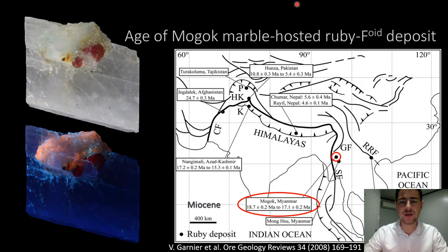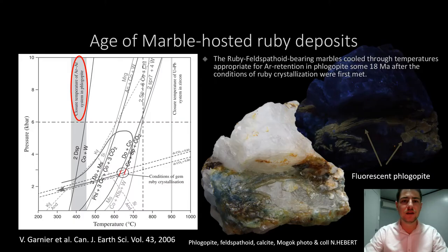What about the age of the marble-hosted ruby deposits from Mogok? This occurrence is located close to major tectonic features from during Himalayan orogenesis directly in the suture zone from the Himalayas. Phlogopite crystals are isolated, and the minimum age for argon retention in the phlogopite associated with the ruby-feldspathoid marbles are dated some 18 million years after the conditions of ruby crystallization were first met.